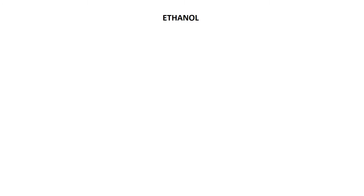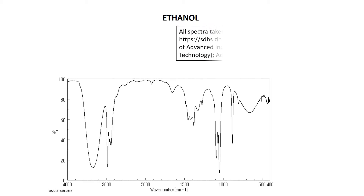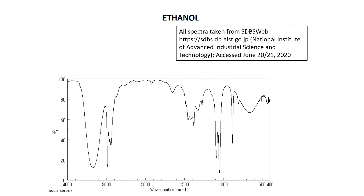So enough of that generalization stuff. Let's look at a particular spectrum. Here is the infrared spectrum of ethanol. All spectra that I'm going to use in this are taken from the SDBS web — the National Institute of Advanced Industrial Science and Technology in Japan. I accessed all of them between June the 20th and the 21st, 2020.